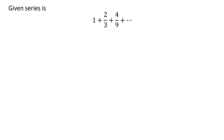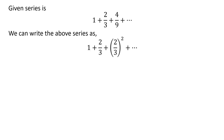The given series is 1 plus 2 upon 3 plus 4 upon 9 plus so on. We can rewrite the above as 1 plus 2 upon 3 plus square of 2 upon 3 plus so on. From the above, we get the first term a is equal to 1 and the common ratio r is equal to 2 upon 3.